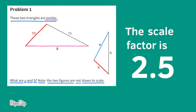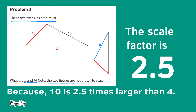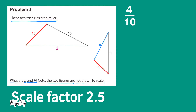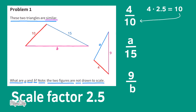The scale factor is 2 and a half because 10 is 2 and a half times larger than 4. Now that we know the scale factor is 2 and 5 tenths, we can find the missing side lengths. 4 is the corresponding side length for 10, A is the corresponding side length for 15, and 9 is the corresponding side length for B. 4 times 2 and a half equals 10, and 10 divided by 2 and a half equals 4.